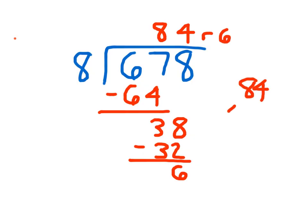Our check is just as before. We take 84, we multiply it by 8, and we add in the remainder.